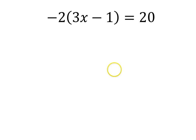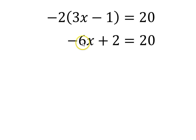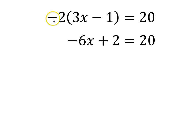For the next example, we'll use the distributive property. Inside the parentheses we have 3x minus 1 — we can't combine those because they're not like terms. So I'm going to multiply the expression by negative 2 using the distributive property. That gives us negative 6x, because negative 2 times 3x is negative 6x, plus 2, because negative 2 times negative 1 is positive 2 — a negative times a negative is a positive, and 2 times 1 is 2. This equals 20.